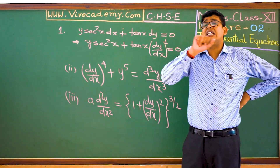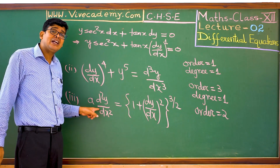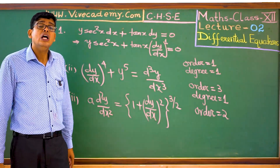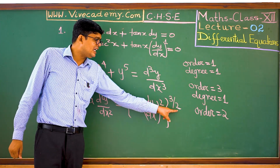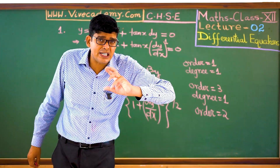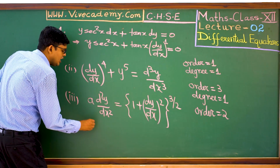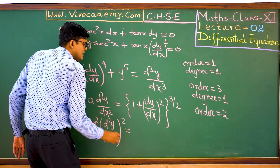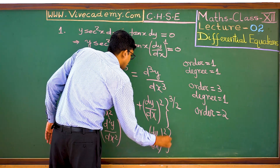Now let us find the degree. We need to bring the equation to normal form. The highest order derivative has a fractional power — 3/2 — which we cannot accept. We need to free the fractional power by squaring both sides. Squaring: (d²y/dx²)² = [1 + (dy/dx)²]³. Now in this normal form, the power of the highest order derivative d²y/dx² is 2. So the degree is 2.